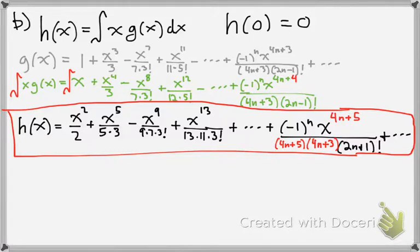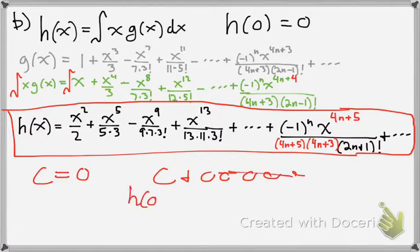And you may be wondering, where's your plus C? Well, if we did add a plus C, which we should, but look at our initial condition here. If h(0) is 0, then C would be 0 because h(0) equals C plus a bunch of 0s that go on pretty much forever. So C would equal 0.